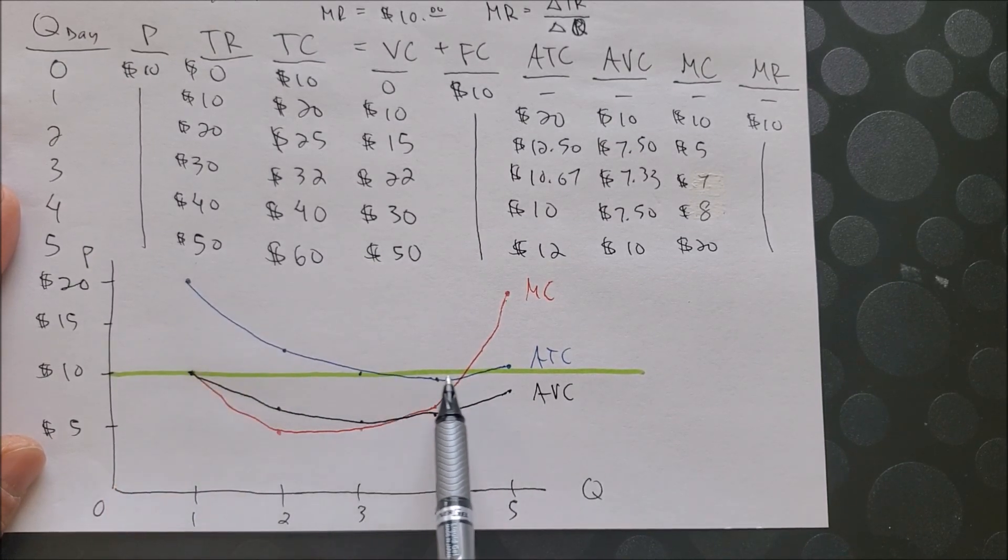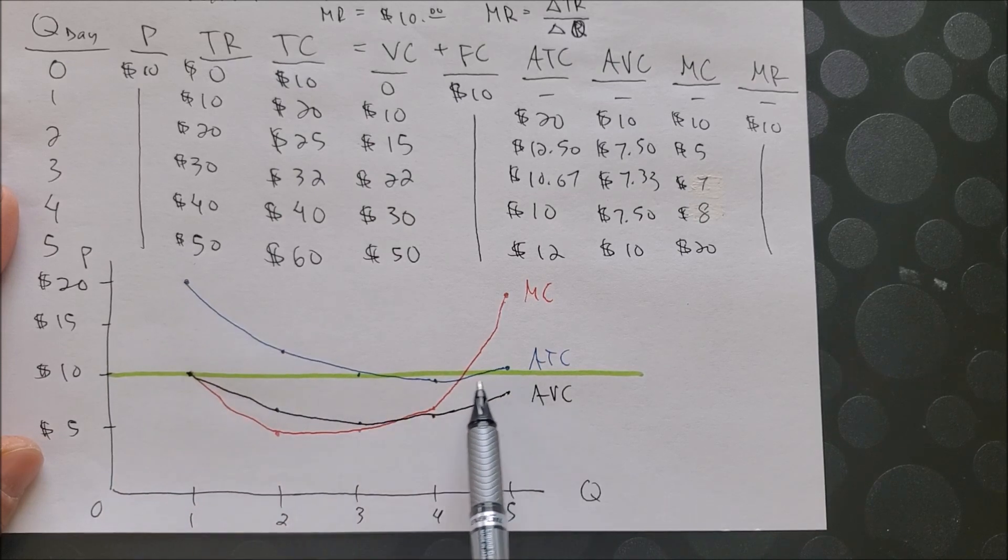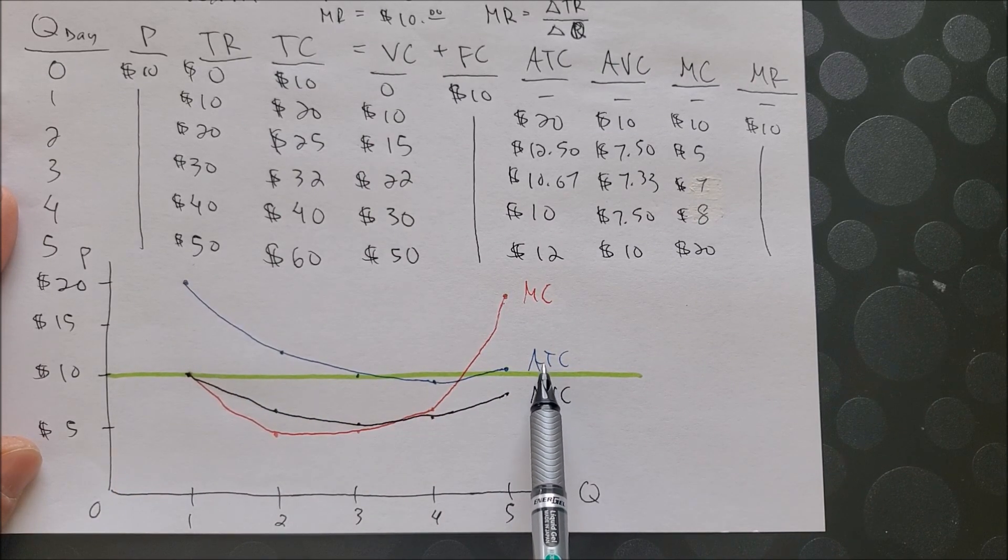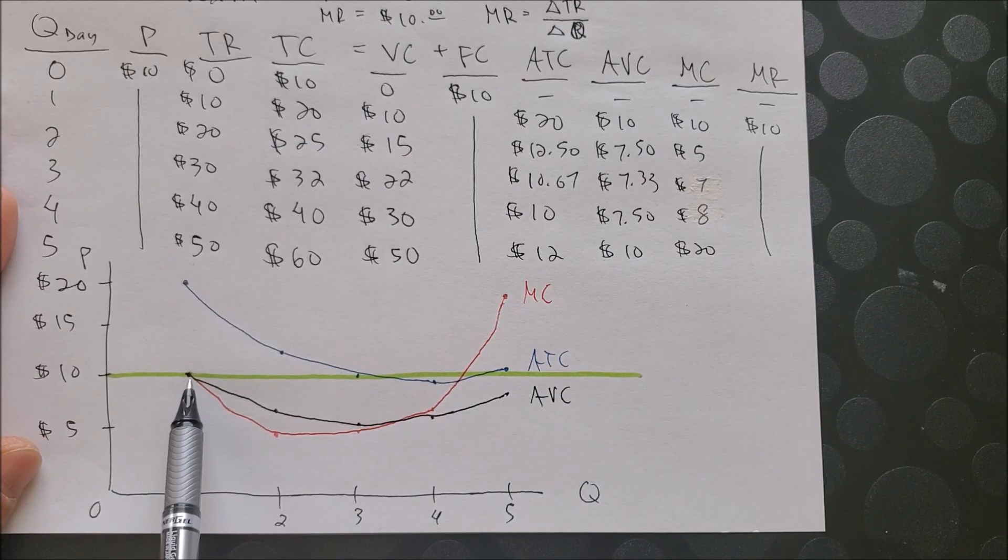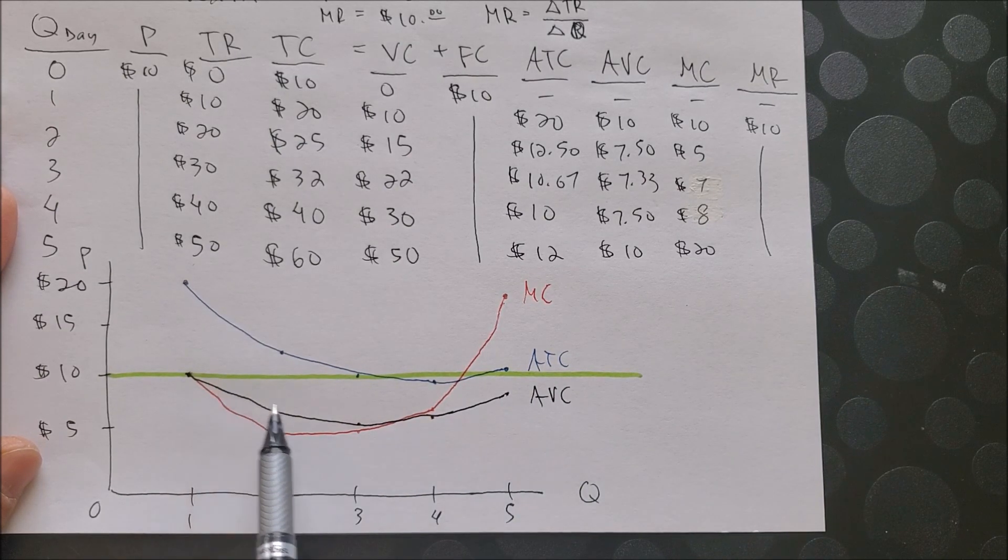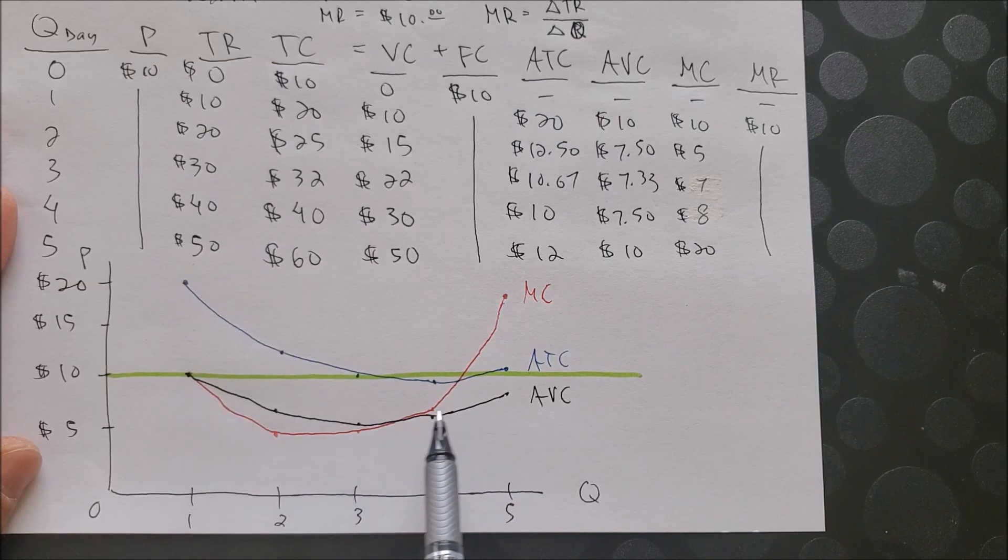This is what you can expect to pay on average, which includes both your labor and fixed costs. Here you have your average variable cost in black, and this is what you pay for your labor only.